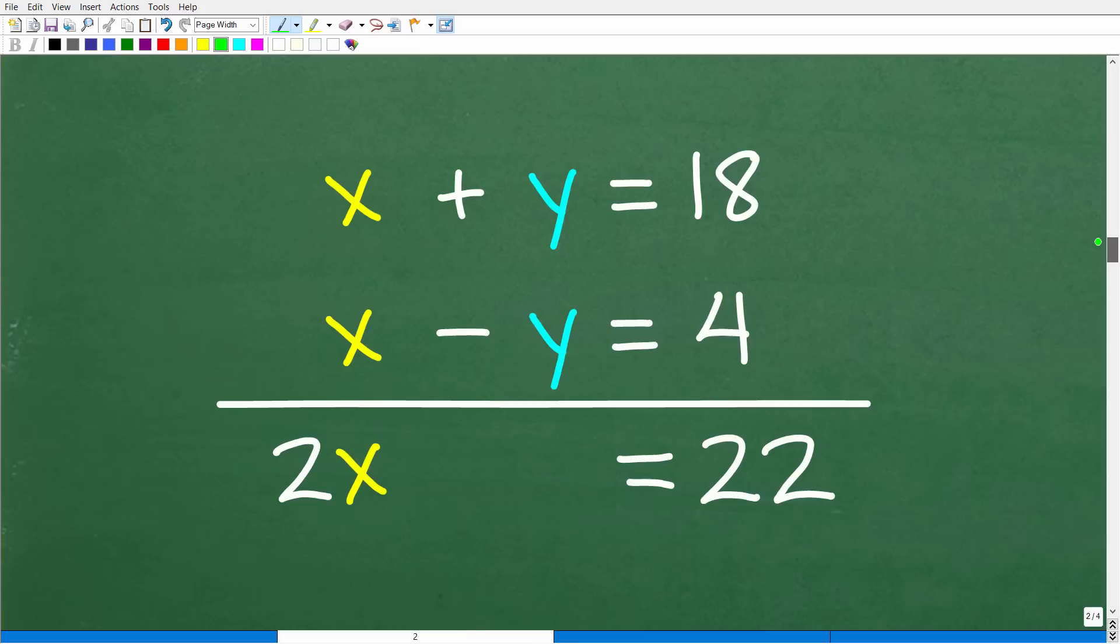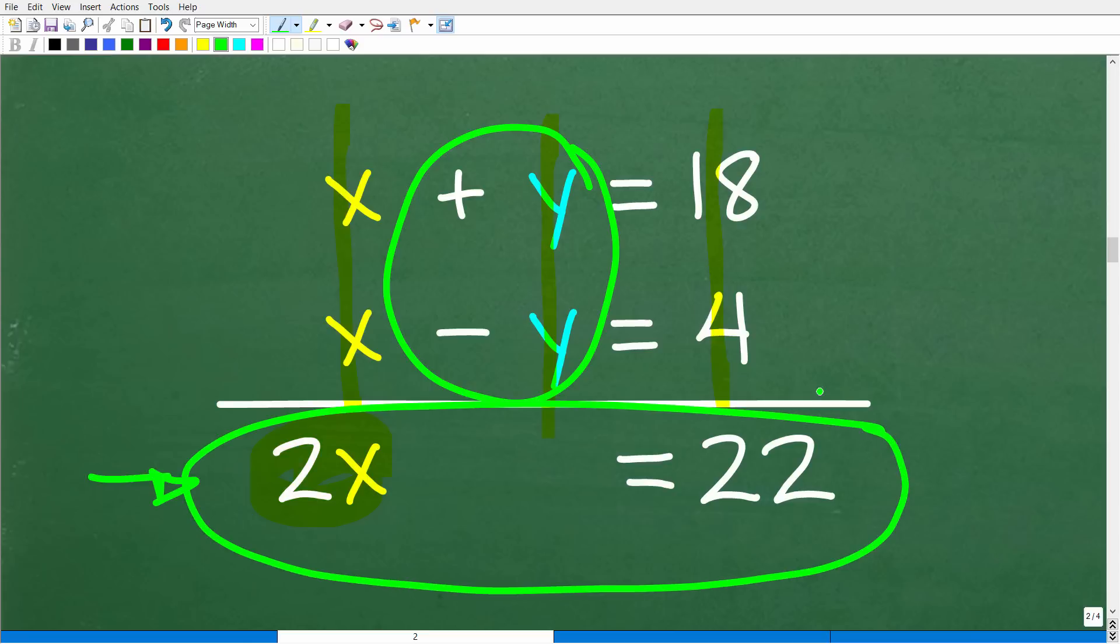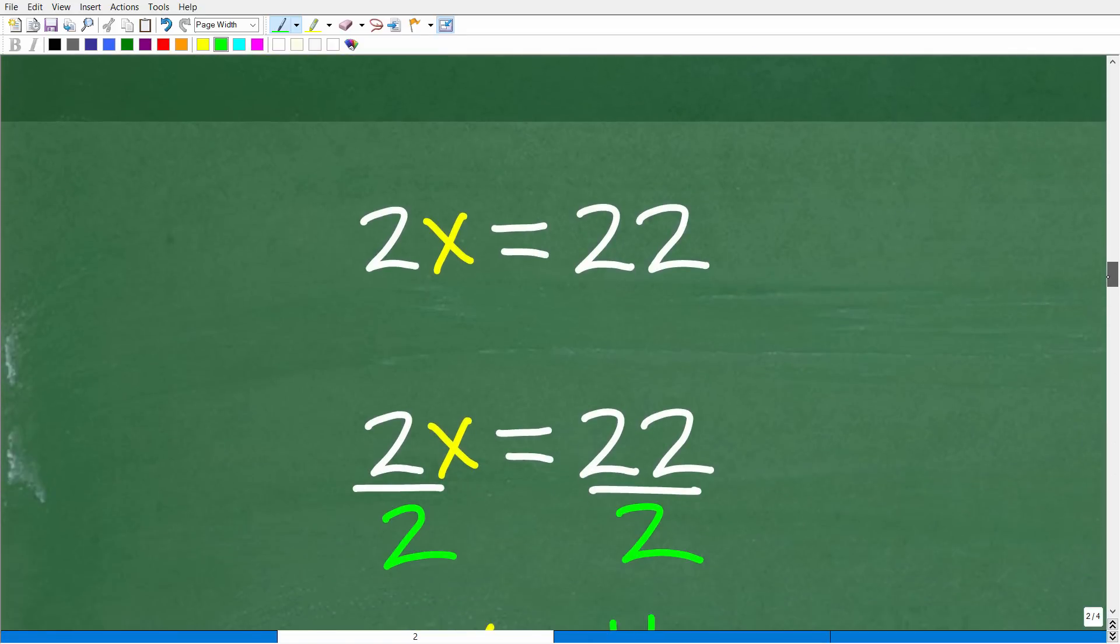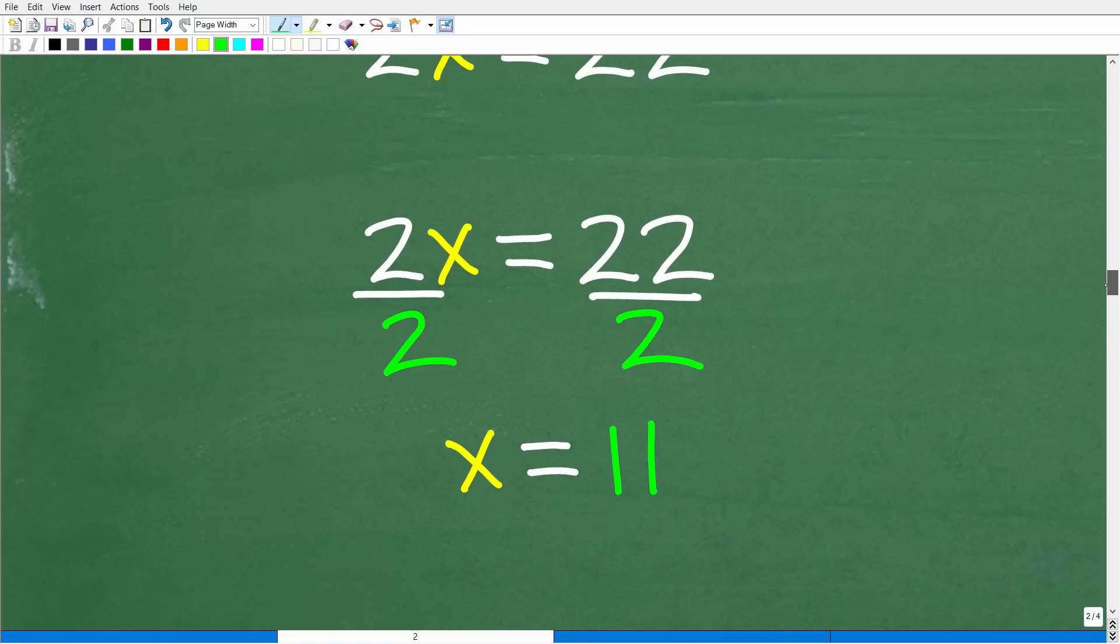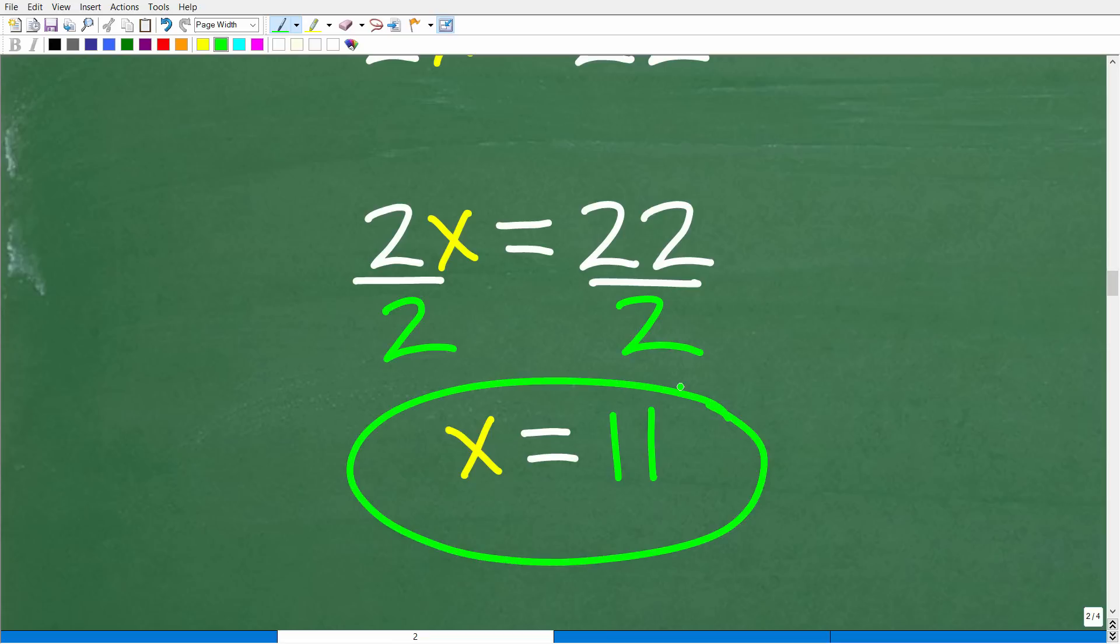So x plus y is equal to 18 and x minus y is equal to 4. What I'm going to do is I'm going to add down in a column manner. So x plus x is 2x and then y minus y is 0. So this is what you're trying to achieve. You're trying to eliminate one variable and get an equation in just one variable. So we're eliminating the y's here and 18 plus 4 is 22. Now we have 2x is equal to 22 and now we have a simple basic one variable linear equation that we can solve for x. So 2x is equal to 22 to solve for x. All we have to do is divide both sides of the equation by 2. So x is equal to 11.